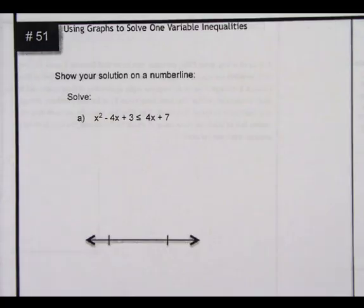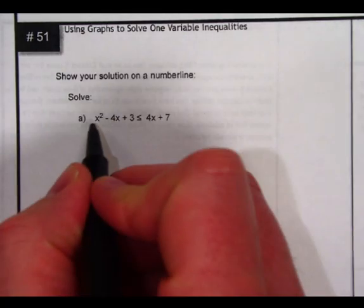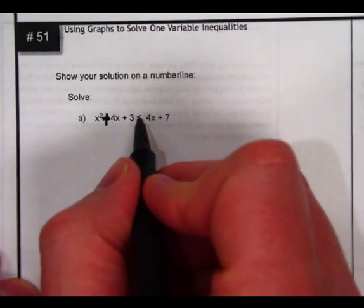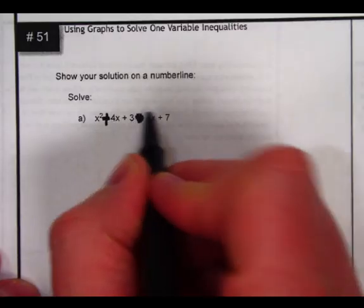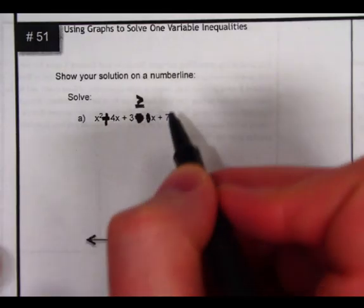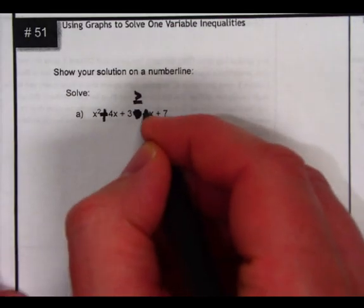A couple of typos in this question that we need to fix before we even start is that this should be x squared plus 4x plus 3, and then this symbol here should be greater than or equal to, and that number 4 should not be there. So we'll just scribble that out as well.